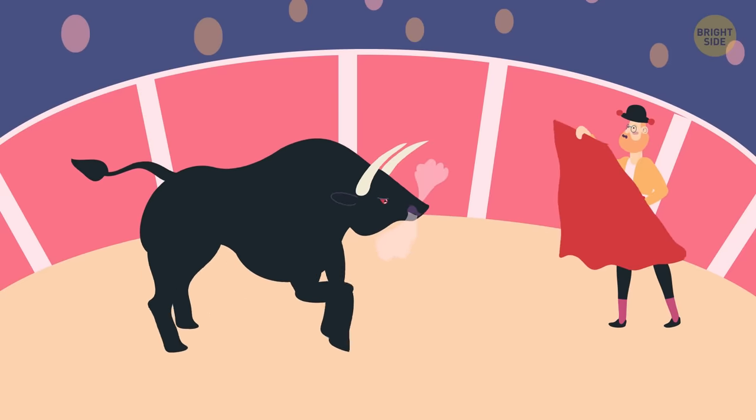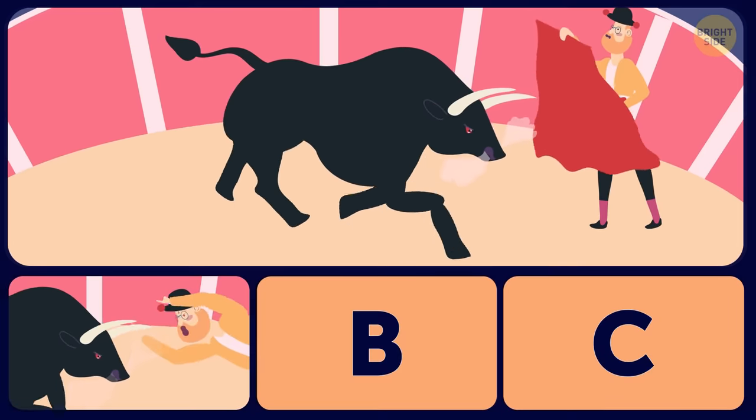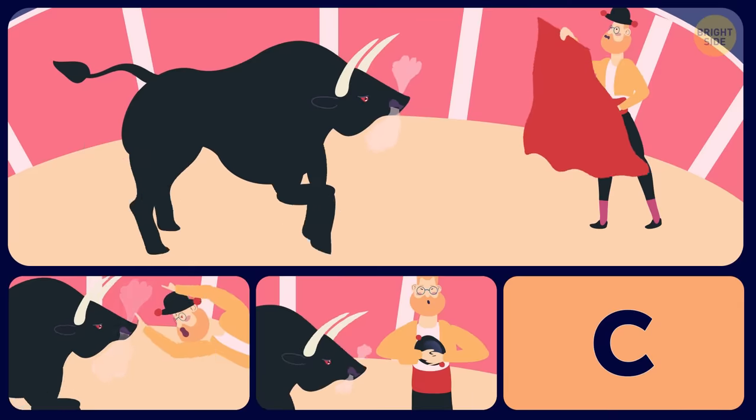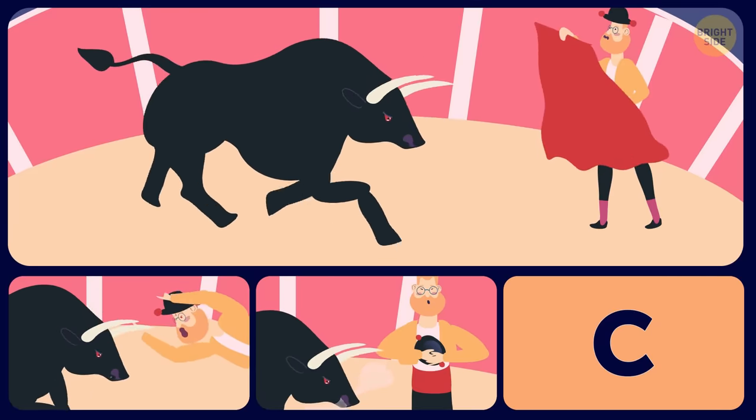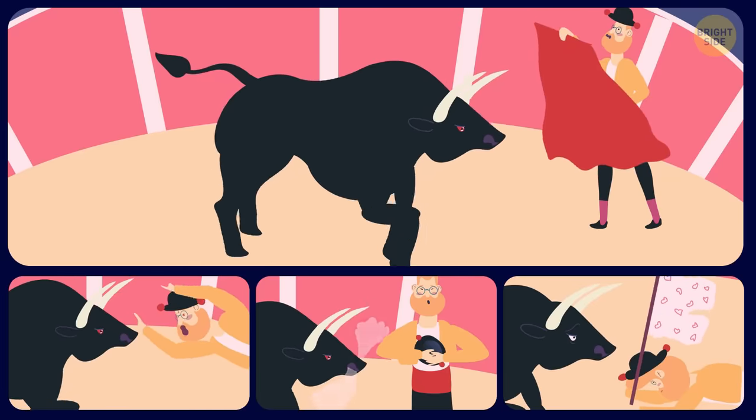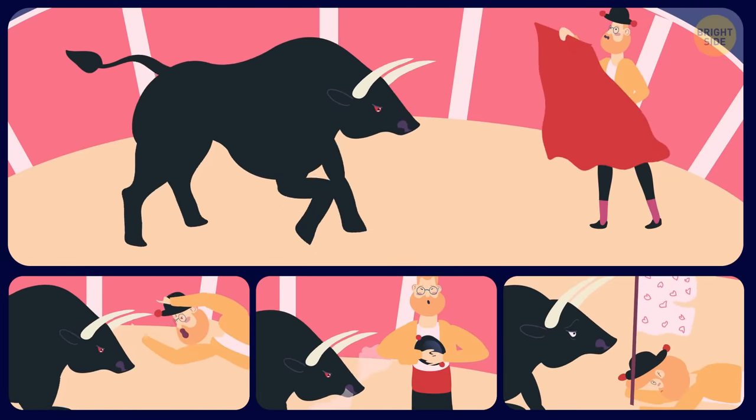13. If a bull was charging at you, you would A. Run toward the enraged animal. B. Stand still until the bull is near and then throw a piece of clothing in another direction. C. Lie down on your back and hope the bull will spare your life.